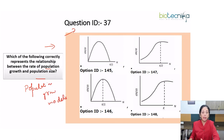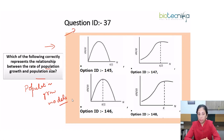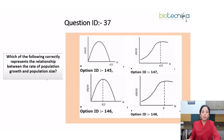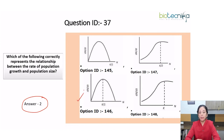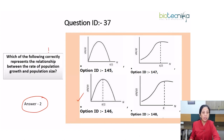One important topic to be focused from ecology is population ecology, covering the two population growth models: exponential and logistic. This question is based on the logistic population growth model. The right option is option 2. Let us discuss why it would be the right option — we had to identify which graph represents the correct relationship between the rate of population growth (dN/dt) and population size (N).